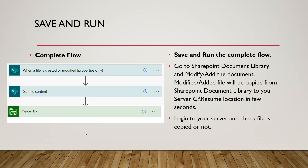Save the complete flow. The flow will have three steps: the trigger 'when a file is created or modified,' then 'Get File Content,' and finally 'Create File.' To test the flow, go and modify or add a file in the document library. The flow will automatically trigger and copy that file from the document library to the C:\resume location on the on-premise server.